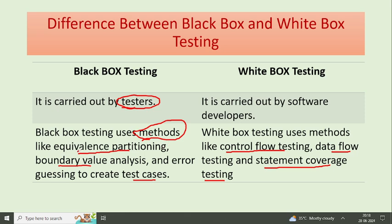So remember: in black box testing, the methods are equivalence partitioning, boundary value analysis, and error guessing. But in white box testing, the methods are control flow testing, data flow testing, and statement coverage testing — because the concern here is internal coding.